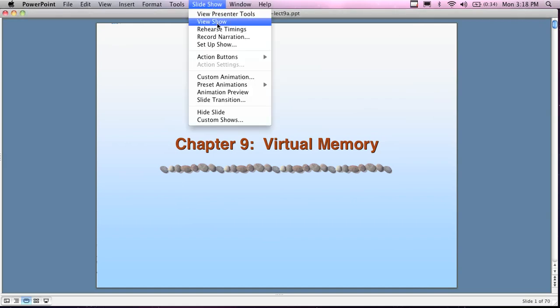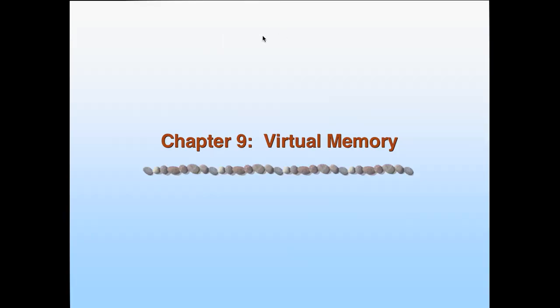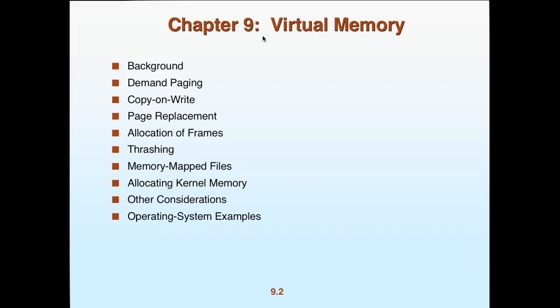Today we are doing chapter 9 on virtual memory, which is a continuation from chapter 8 last week when we looked at main memory. We'll take a look at the concept of virtual memory, define it, cover background information, demand paging, copy-on-write, page replacement algorithms, allocation of frames, thrashing, memory mapped files, allocation of kernel memory, as well as some operating system examples.